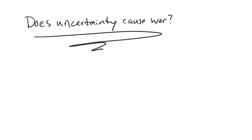In the last few lectures, we've relaxed the assumption that states have complete information — we've allowed uncertainty and incomplete information. What we've seen is that we can, under certain circumstances, get war to occur as a consequence. So, if we take a very black-and-white perspective: with no uncertainty, peace; and with uncertainty, sometimes we get war. Therefore, it is tempting to conclude that uncertainty causes war.